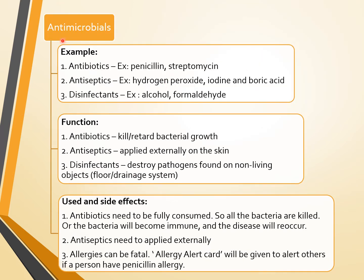The second class is antimicrobials. We have antibiotics — examples include penicillin and streptomycin. Antiseptics include hydrogen peroxide, iodine, and boric acid. Disinfectants include alcohol and formaldehyde. The function of antibiotics is to kill or retard bacterial growth. Antiseptics are applied externally on the skin. Disinfectants destroy pathogens found on non-living objects.